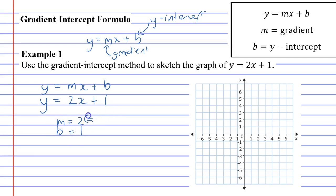From this we know that our gradient must be 2 since m stands for gradient and our y-intercept must be 1.